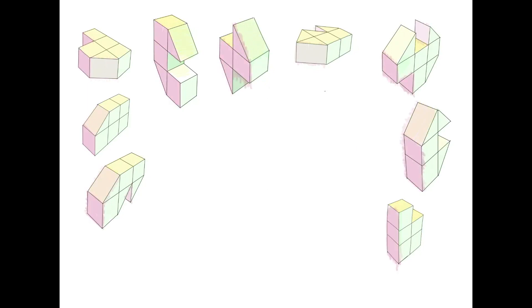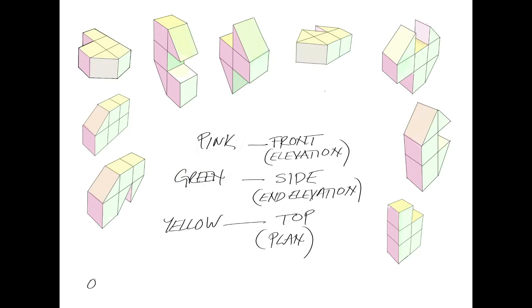To make it simple, we'll see the pink surfaces, green surfaces, and yellow surfaces. Some may have a slight combination of the two because sloping surfaces can be seen from the top and from the sides. So let me get the colors right here: pink will be the front elevation, green will be the end elevation, and yellow will be the plan view.